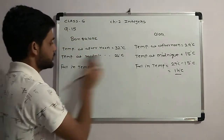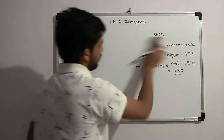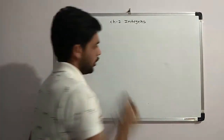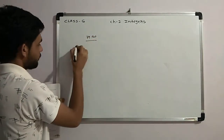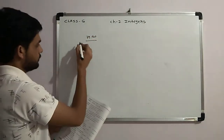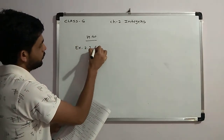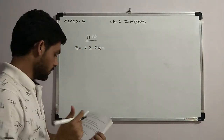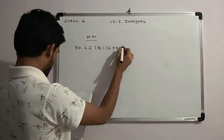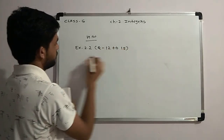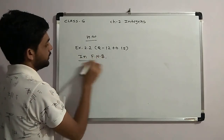Based on today's explanation, your homework is the completion of these questions in your math book. Your homework is exercises 2.2, question number 12 to 15, parts A and B. Thank you.